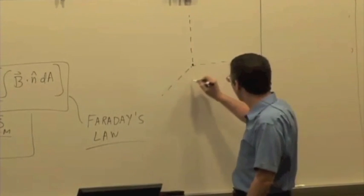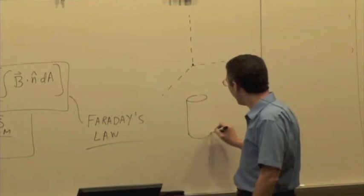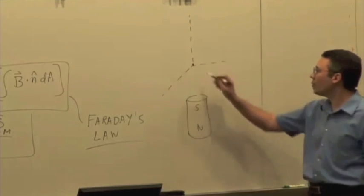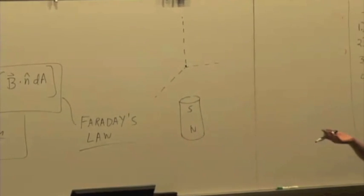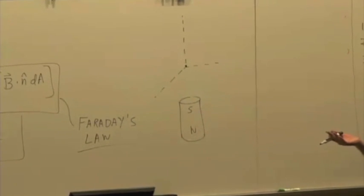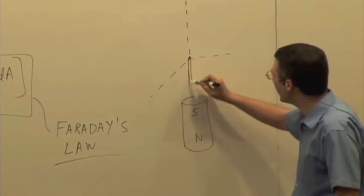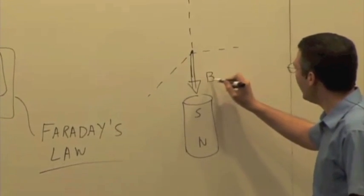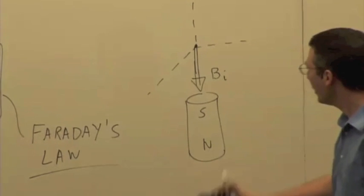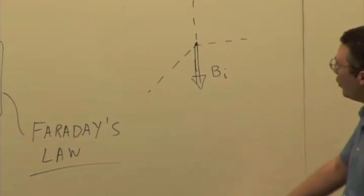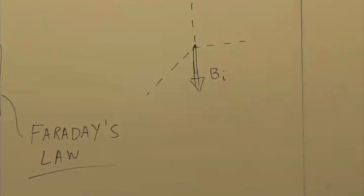So here's our bar magnet. The first thing we have to think about is what's the direction of the magnetic field initially? It's pointing what direction? Down. We know that near the south pole the magnetic field is pointing down. So that's B initial.